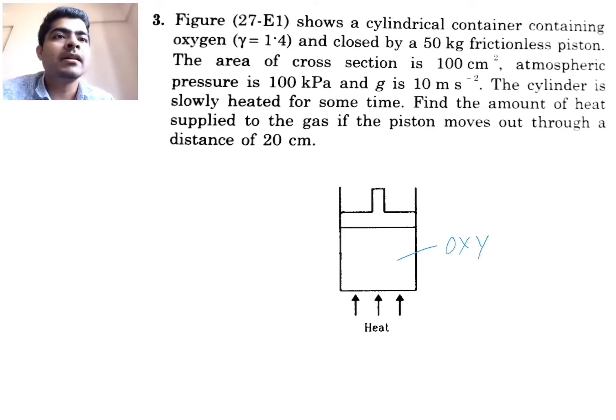The area of cross section is 100 centimeter square. Piston's area is given, atmospheric pressure is given 100 kilopascal, and g which is acceleration due to gravity is 10 meter per second square. The cylinder is slowly heated for some time. Find the amount of heat supplied to the gas if the piston moves out through a distance of 20 centimeter.